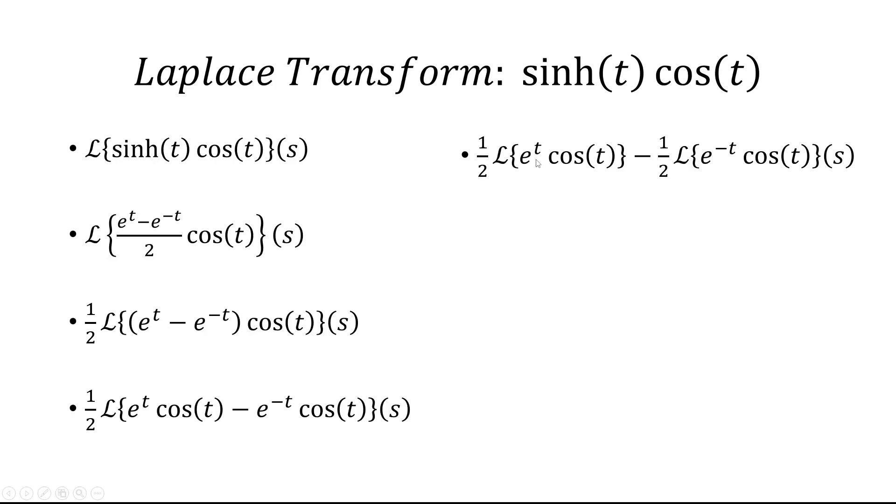e^t cos(t) is just (s-1)/((s+1)^2 + 1). Then we multiply that by 1/2, and then we have minus 1/2 multiplied by (s+1)/((s-1)^2 + 1).